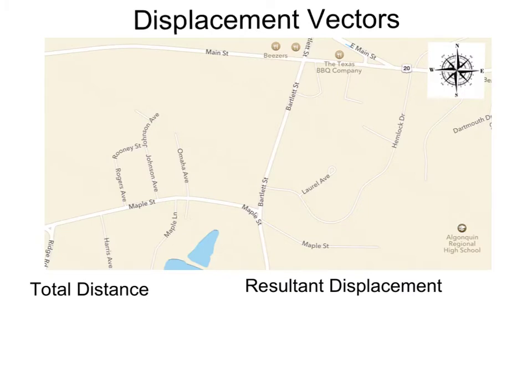Let's look at an example of displacement vectors. Here we are at Algonquin Regional High School. Maybe you're driving your car outside Bartlett Street. So maybe we're right about here. And we travel down Bartlett Street. And then we take a left-hand turn onto Route 20 and travel a certain distance down here. Maybe this distance that we've traveled first is 100 meters. And then we took a left turn and traveled for 200 meters.